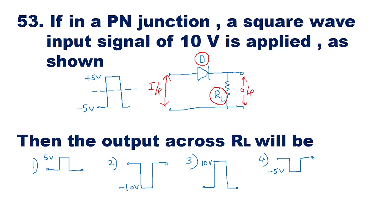The answer we have to give is what will be the output across RL. The input is a square wave waveform having amplitude from plus 5 volt to minus 5 volt. The center line is 0 volt, with plus 5 volt on top and minus 5 volt below. So the total amplitude is from plus 5 volt to minus 5 volt.